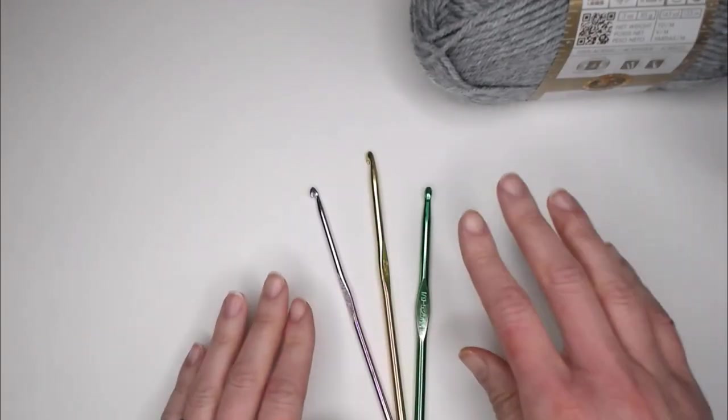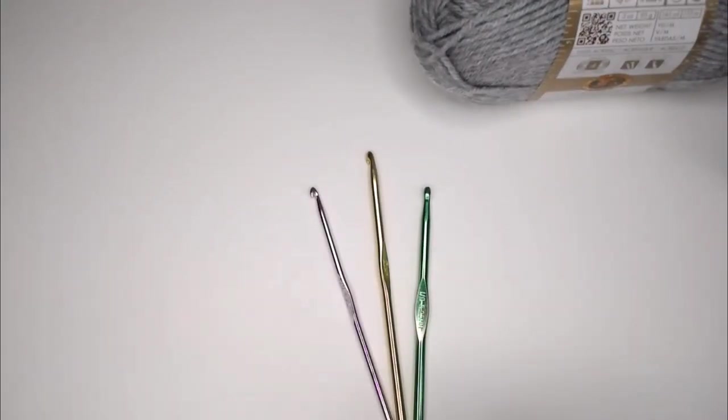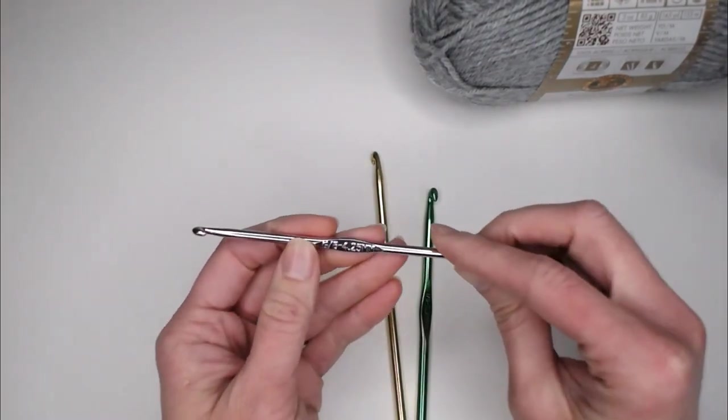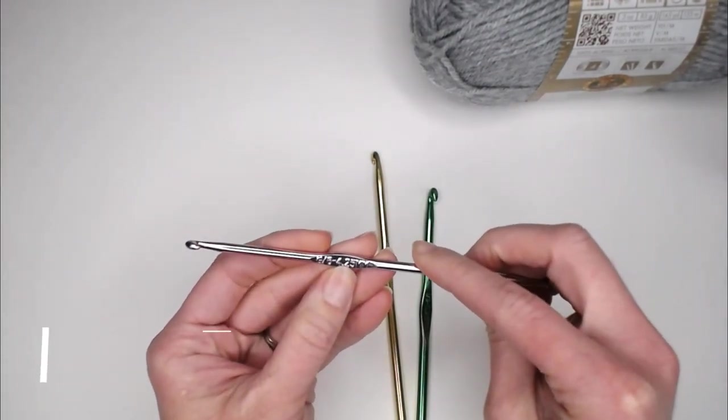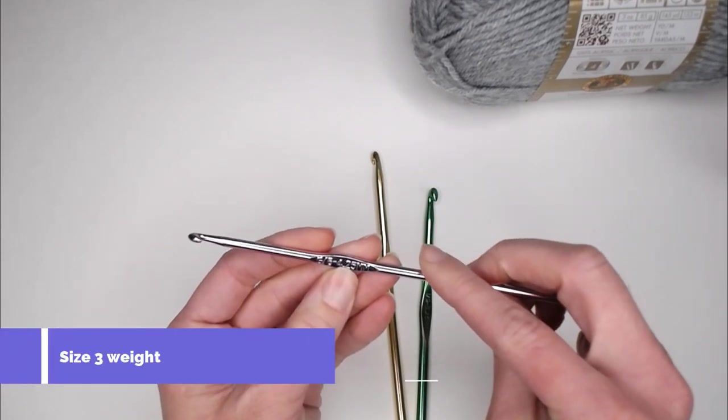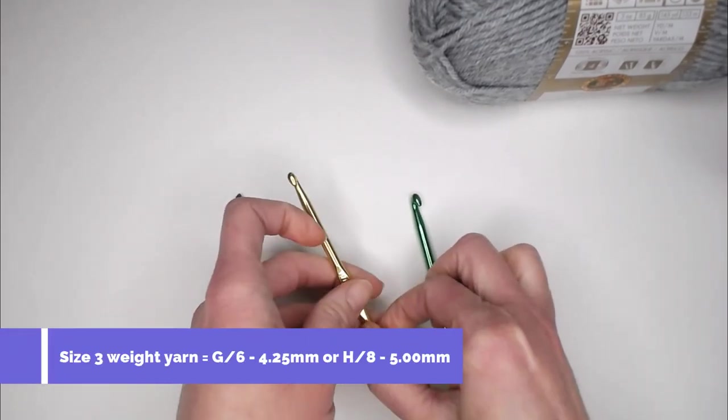Next thing you're going to need for supplies is a crochet hook. Now depending on what yarn you're using, if you're using a size 3 weight yarn, you're probably going to want to use a size G6 or 4.25 millimeter crochet hook.